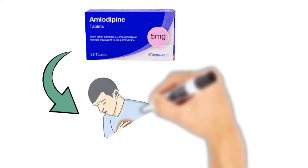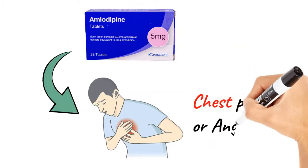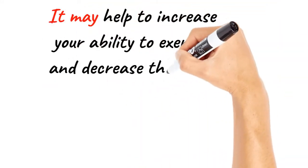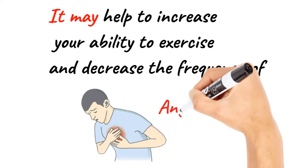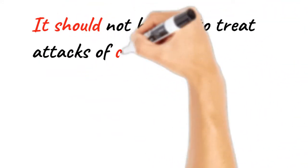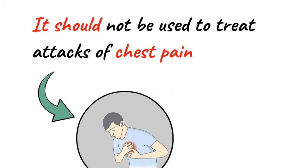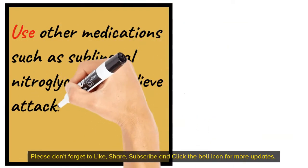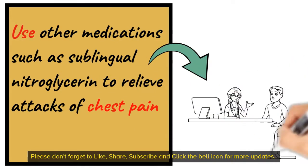Amlodipine is also used to prevent certain types of chest pain or angina. It may help to increase your ability to exercise and decrease the frequency of angina attacks. It should not be used to treat attacks of chest pain when they occur. Use other medications such as sublingual nitroglycerin to relieve attacks of chest pain as directed by your doctor.